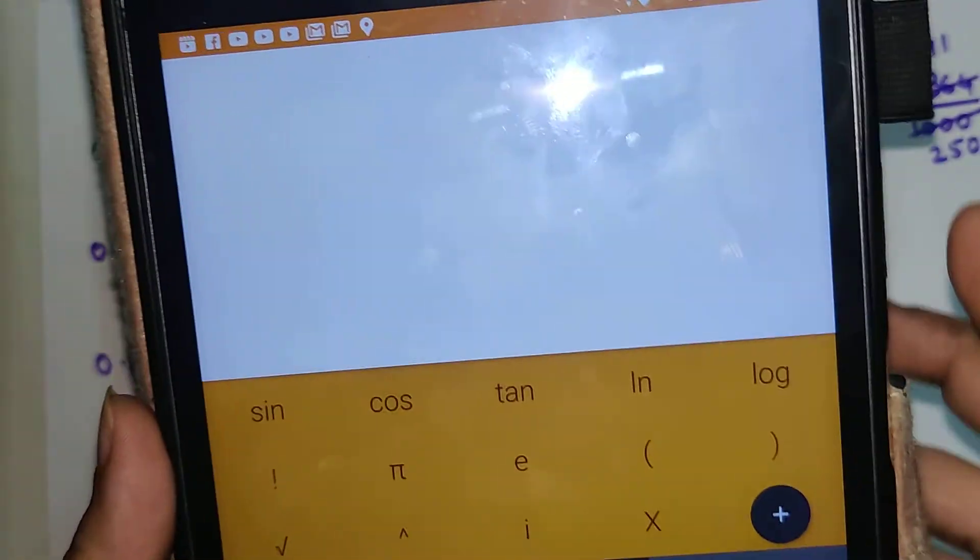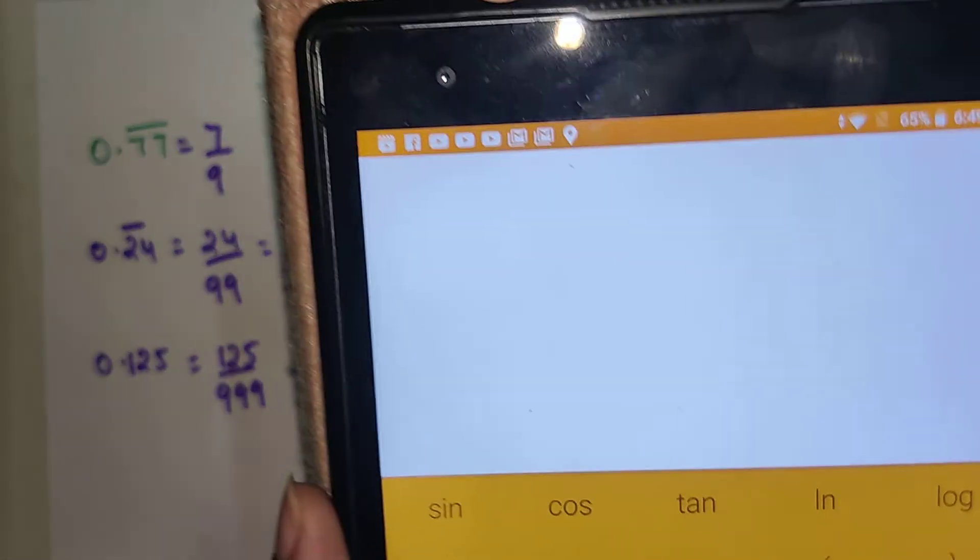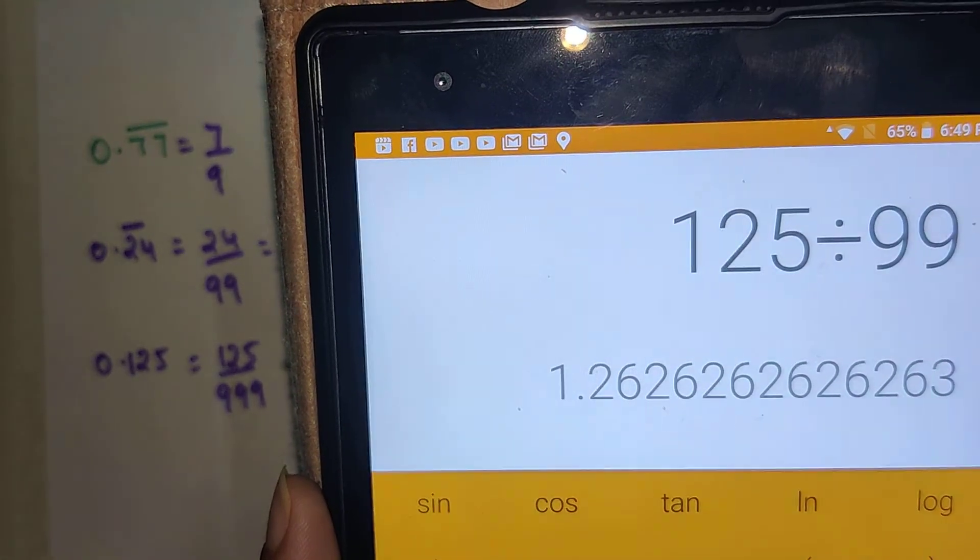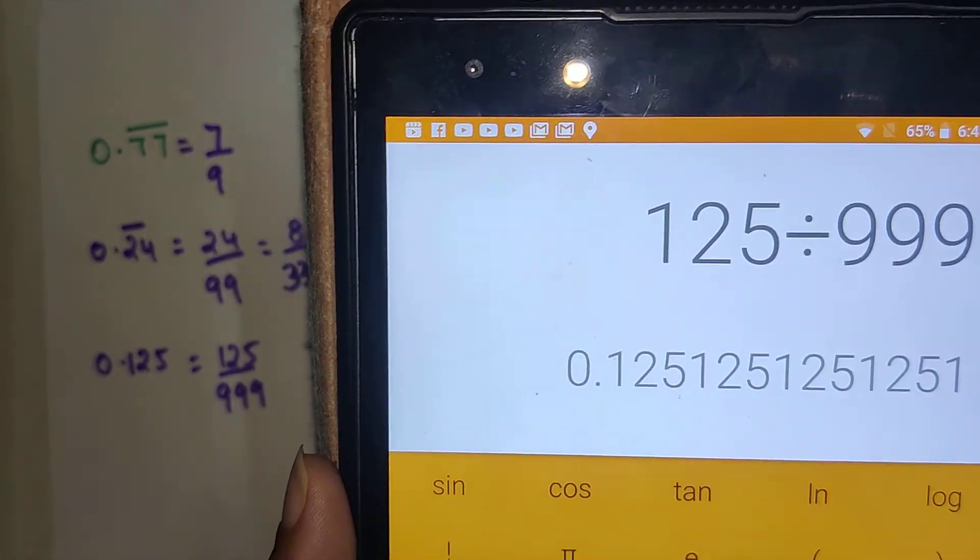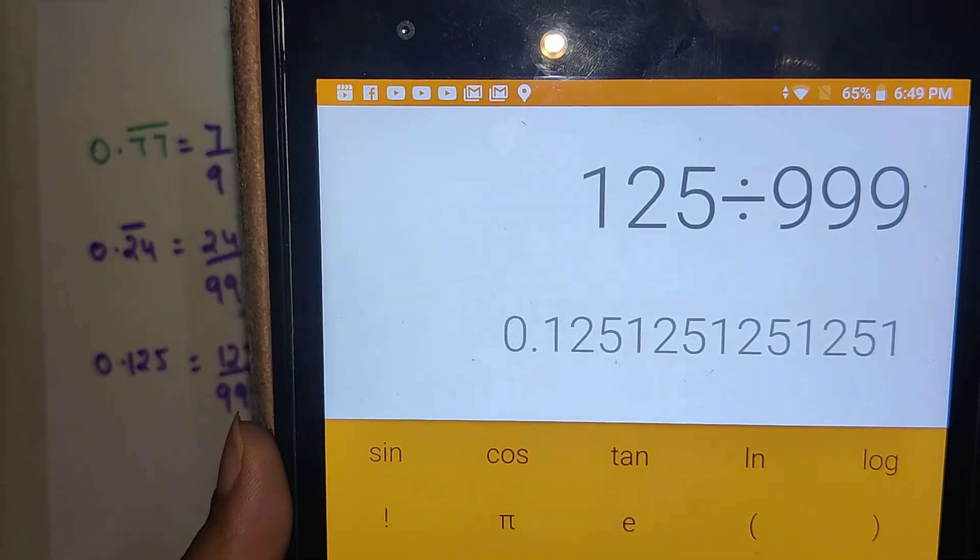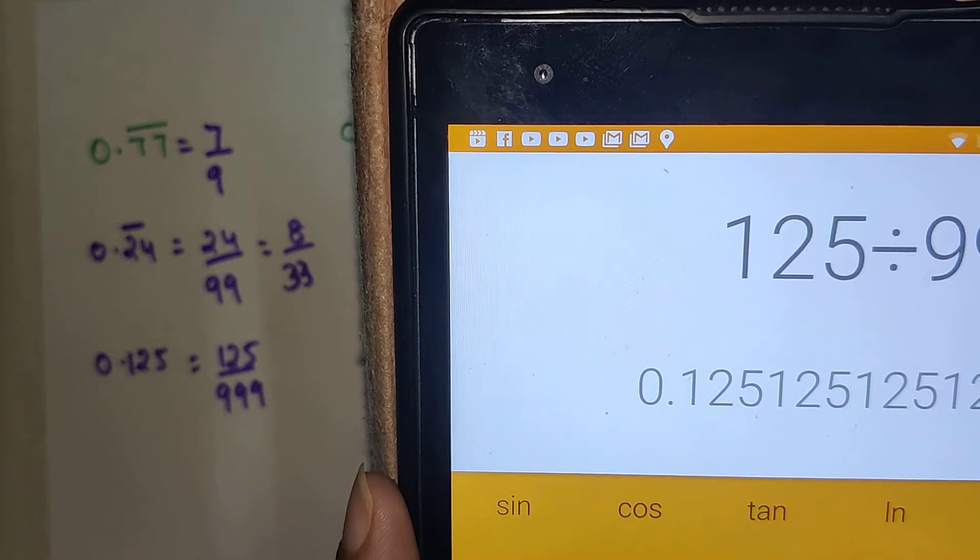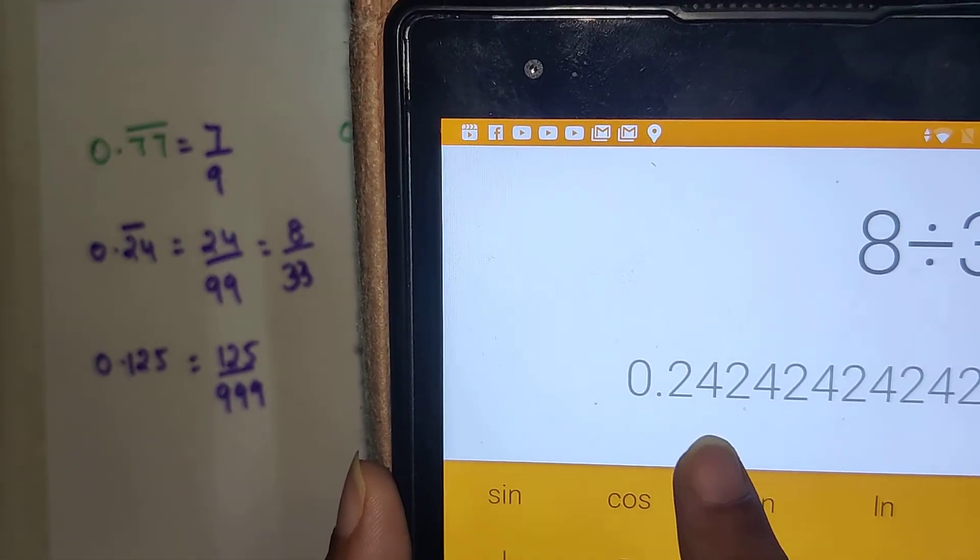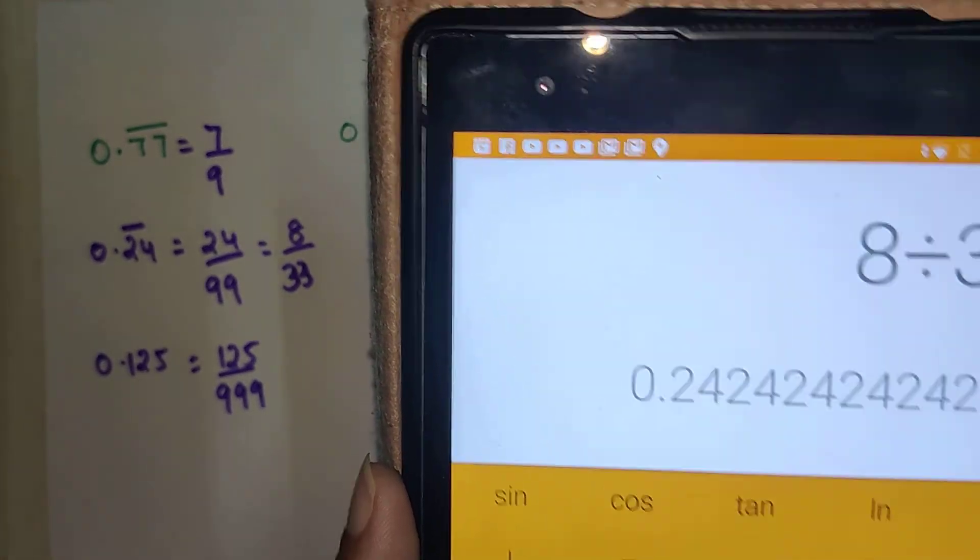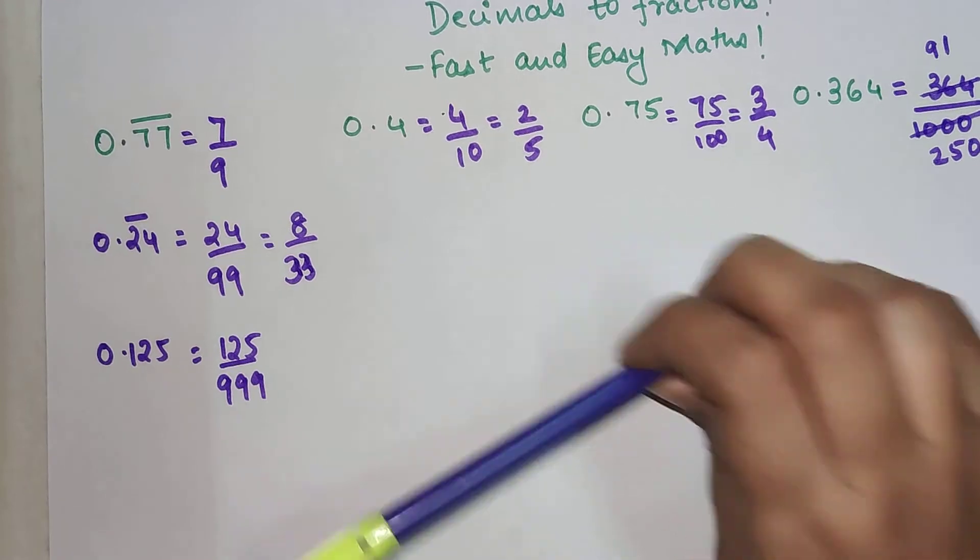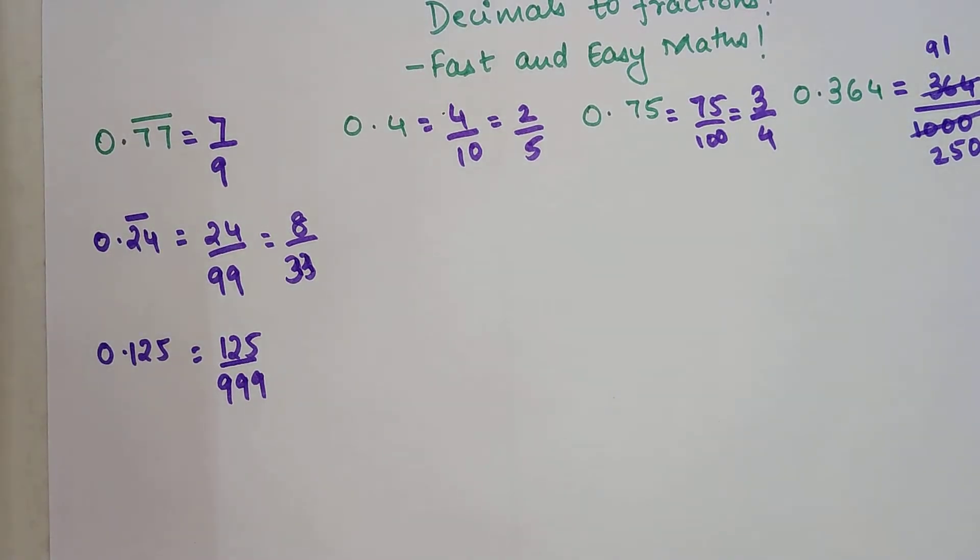We can check this with the help of calculator. So we got 125 divided by 999. We got the answer as 0.125, 125, 125, 125 which is recurring. Similarly, let's try for 8 divided by 33. We are getting 24, 24, 24, 24. That was my decimal part of the question. I hope you got the idea of how to do these kind of things.